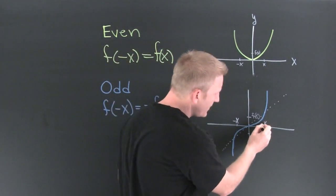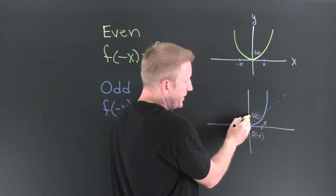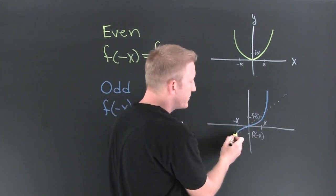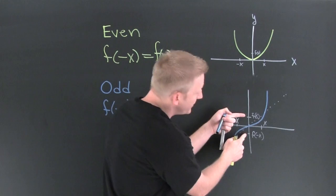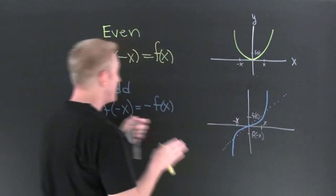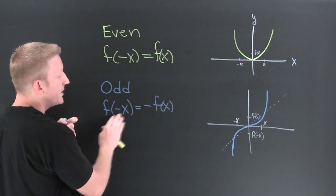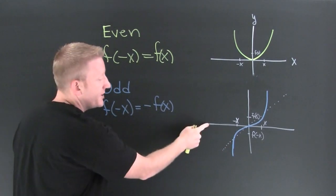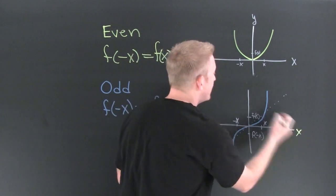If I take a look at this, f of x is right here. And then minus x is right here. What do you notice about these two? They're on opposite sides of that line. And that's what this says, that these two guys are going to be on opposite sides of the x-axis.